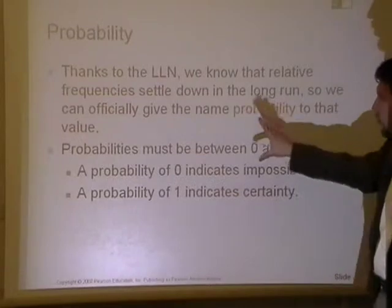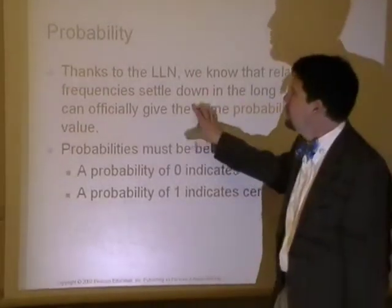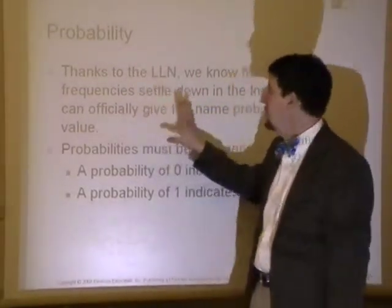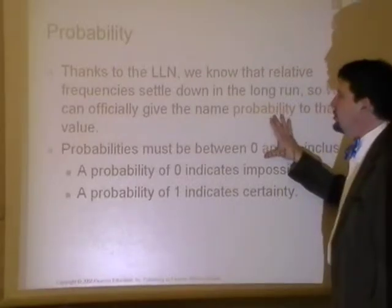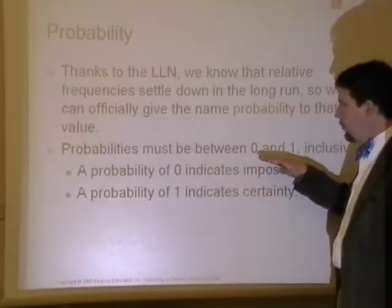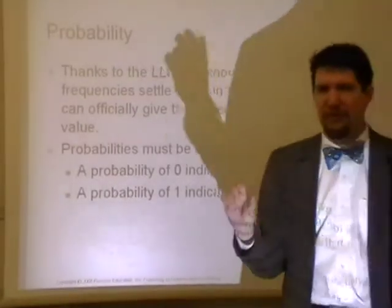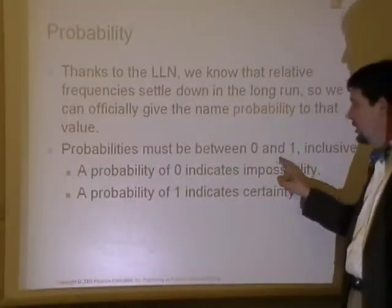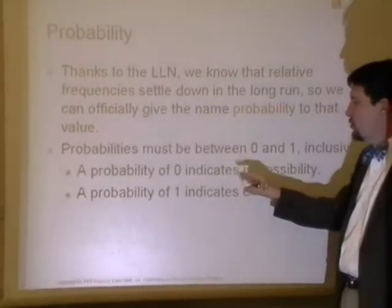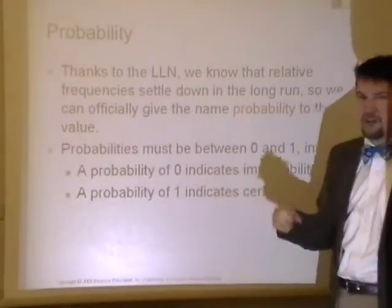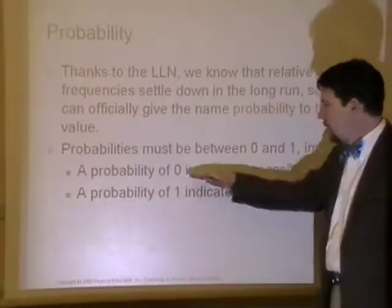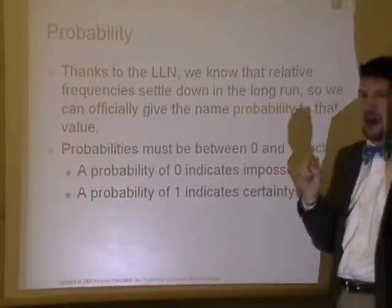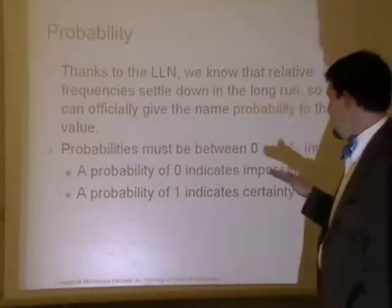Now, we can actually make a relationship here between probability and correlation. Probability is going to be a value between 0 and 1, like correlation is a value between 0 and 1. And kind of like correlation where correlation of 0 means that there is no linear relationship, a probability of 0 indicates that there is absolutely no chance of that event happening.